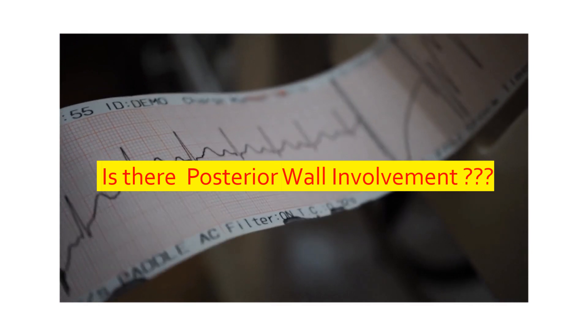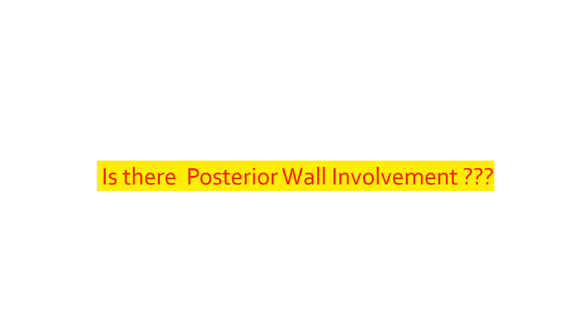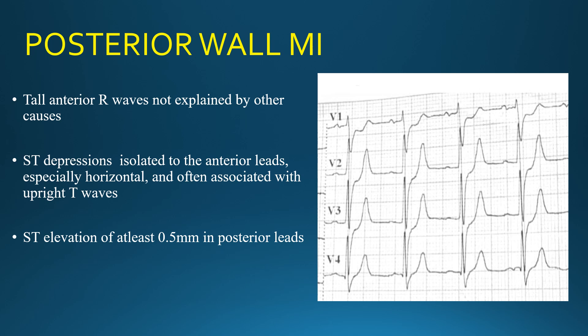The question arises whether she is also having posterior wall MI. For a posterior wall MI, we look for: tall R waves in lead V1 and V2; ST depressions isolated to anterior leads that are horizontal or upsloping, associated with upright T waves; and if posterior leads are applied, ST elevations of 0.5 mm or more in those posterior leads.